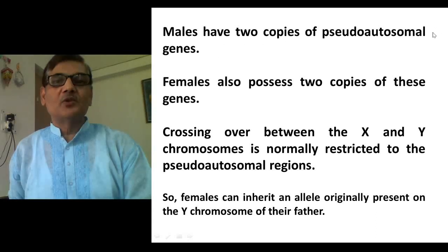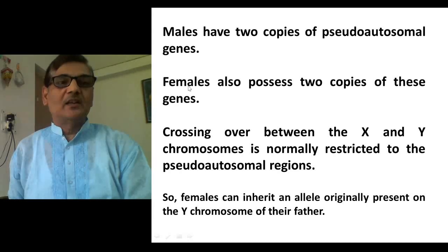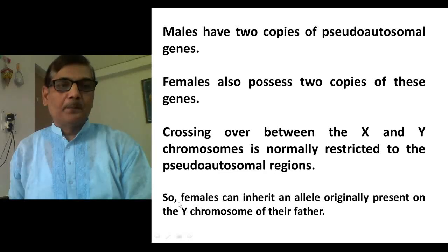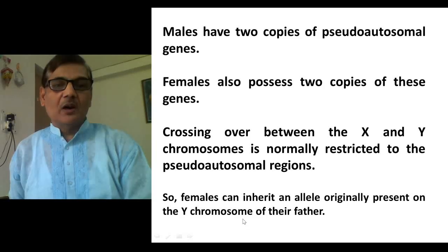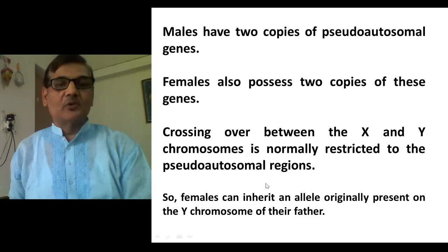Males have two copies of pseudo-autosomal genes — just like autosomes, a male will have X and Y chromosomes, and the single gene locus will be present on both. Females also possess two copies of pseudo-autosomal genes. Crossing over between X and Y chromosomes is normally restricted to the pseudo-autosomal regions. Females can inherit an allele originally present on the Y chromosome of their father because of this crossing over or exchange of chromosome segments between X and Y.